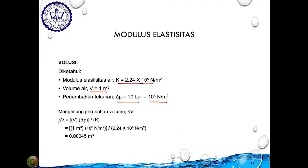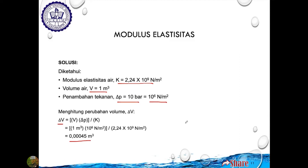Delta V kita pindah ke ruas kiri sehingga yang lain ada di ruas kanan, yakni volume dikalikan dengan perubahan tekanan, dibagi dengan modulus elastisitasnya. Kalau kita selesaikan persamaan ini, kita menemukan bahwa kalau terjadi perubahan tekanan sebesar 10 bar atau 10⁶ N/m², maka akan terjadi perubahan volume air sebesar 0,00045 m³.